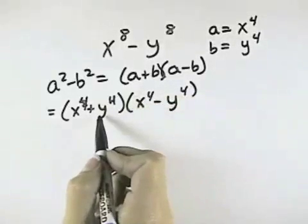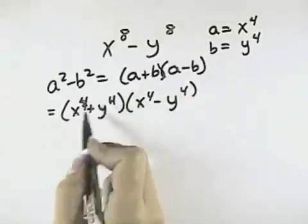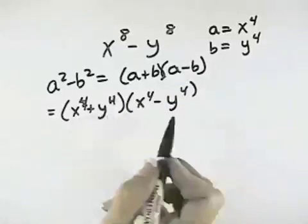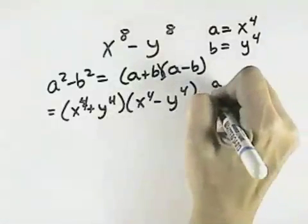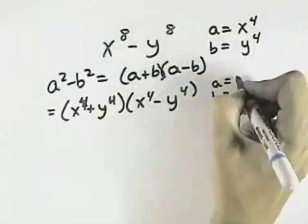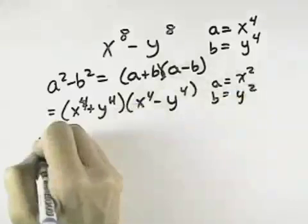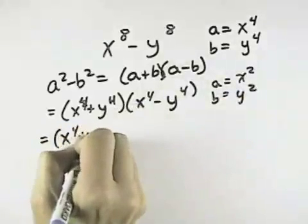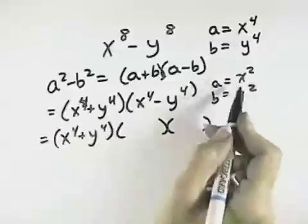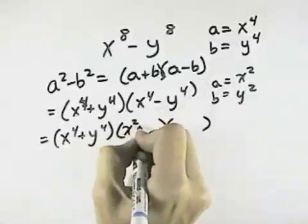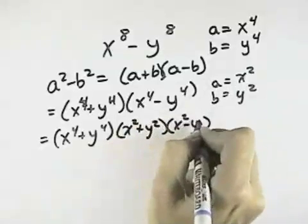Now our first term is the sum of squares — there's no way to factor that. They're not cubes, so there's no other way to factor two terms. But our second factor, we can see we have the difference of squares again. So we need to identify our new a and b, which is the square root of each of these terms, which is x squared and y squared. So our first factor remains the same, cannot be broken down any further. But our second factor can be broken down into the sum and difference of the square roots, which would be x squared plus y squared times x squared minus y squared.